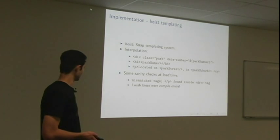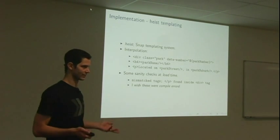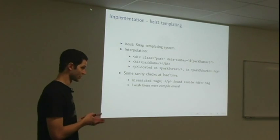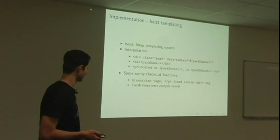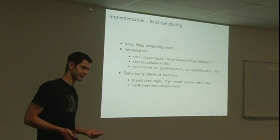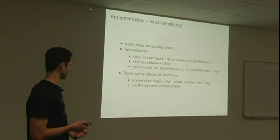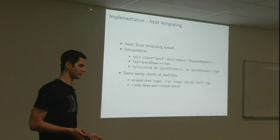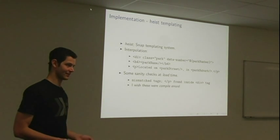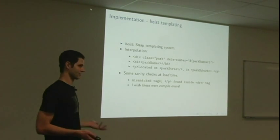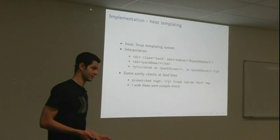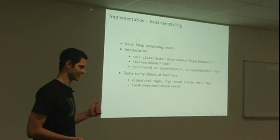The templating system is called Heist. It has interpolation in a fairly reasonable and understandable way. Attributes are interpolated in this way. For actual content in the HTML, it's just like a tag-like syntax. Anyone who's done anything with a templating system should be pretty comfortable with Heist. It does some sanity checks at load time. For example, this is one error I encountered. There's a P inside a div. That's actually not valid HTML. It can detect that and warn you about it. But that's at runtime, and I really wish these were compile errors. If you can detect this, I personally would prefer that it do it at compile time and say, sorry, you don't have a program. Please go and fix this. Some Haskell templating systems do do that. Heist, unfortunately, doesn't.